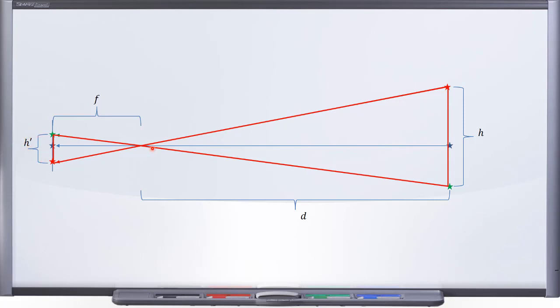These crossing lines here create a pair of similar triangles. Since these triangles are similar, meaning they have the same angles, that means they have the same ratio of base to height, like this.